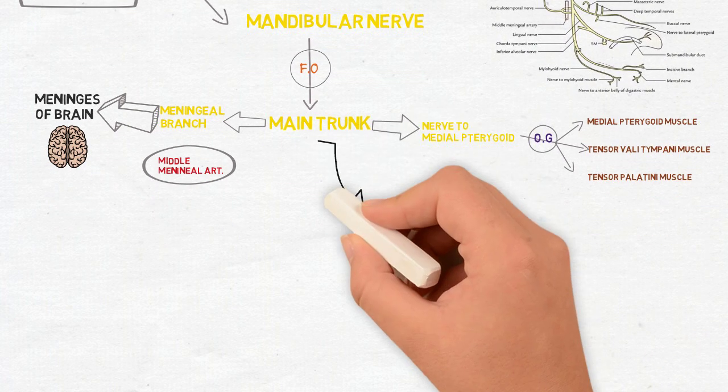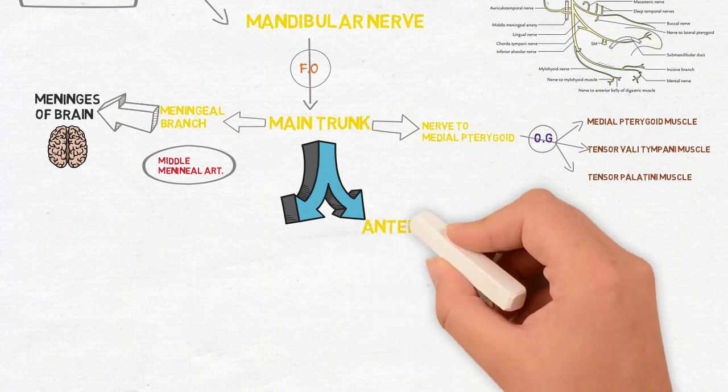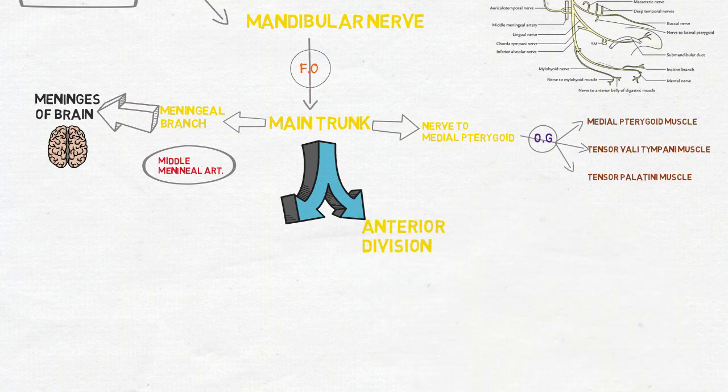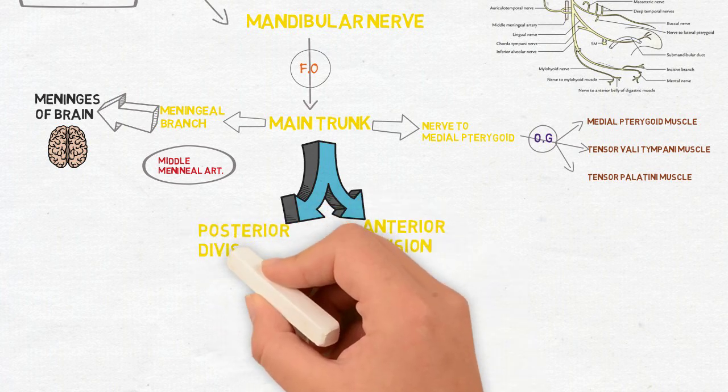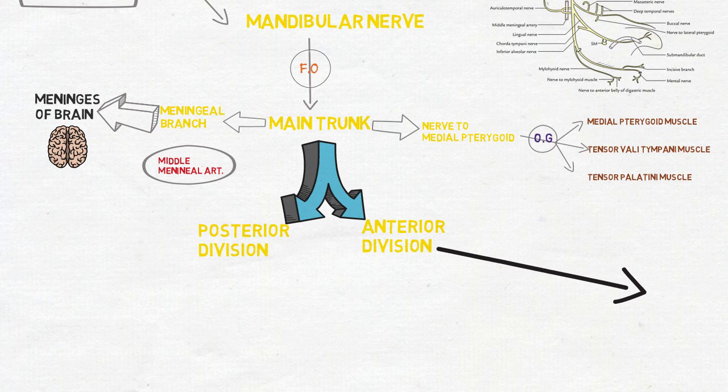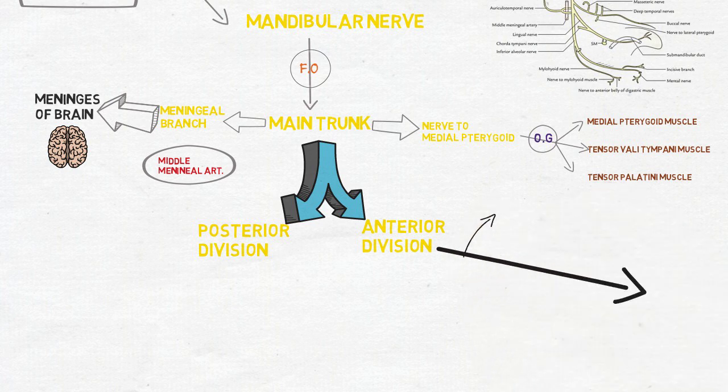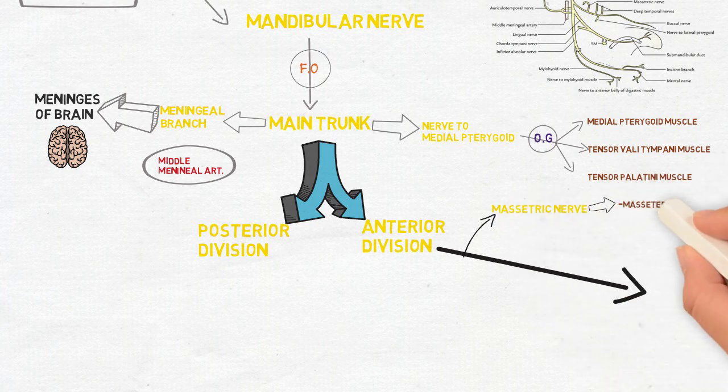The main trunk then divides into two divisions: anterior division and posterior division. The anterior division gives mainly four branches and mainly supplies the muscles of mastication. The first one is the masseteric nerve which supplies the masseter muscle and the temporomandibular joint.